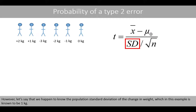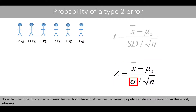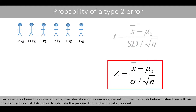However, let's say that we happen to know the population standard deviation of the weight change, which in this example is known to be 1 kilo. Then, we no longer need to estimate the standard deviation based on a sample. We can therefore run a so-called one-sample z-test instead, and use the standard normal distribution to compute the p-value. This will simplify our calculations. Note that the only difference between the two formulas is that we use the known population standard deviation in the z-test, whereas we estimate the standard deviation based on a sample for the t-test. Since we do not need to estimate the standard deviation in this example, we will not use the t-distribution. Instead, we will use the standard normal distribution to calculate the p-value. This is why it is called a z-test.